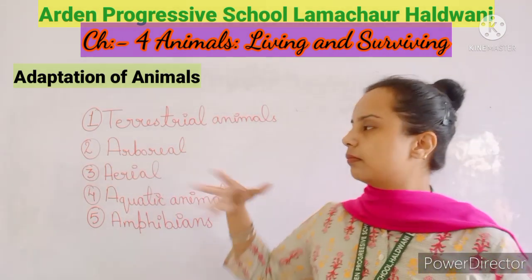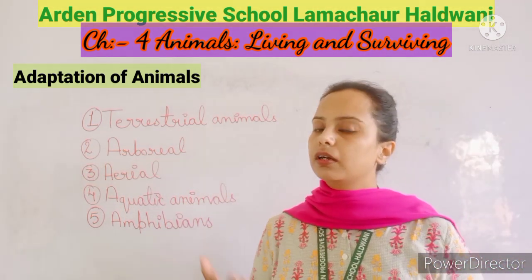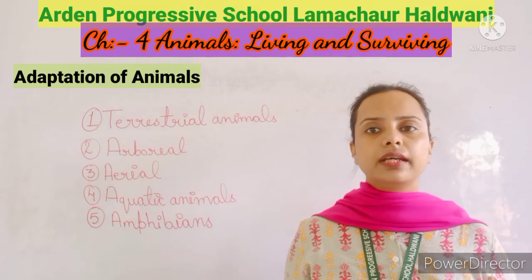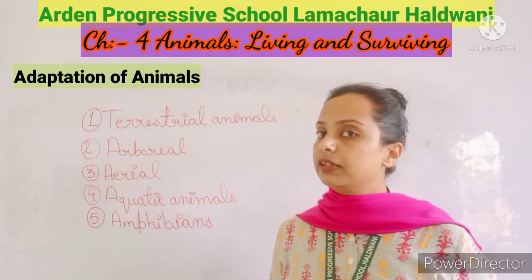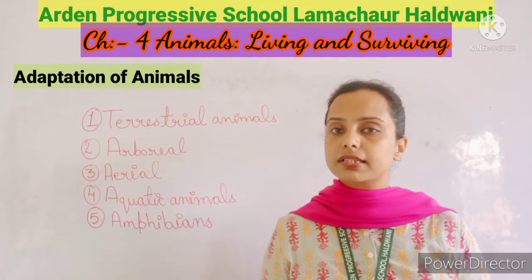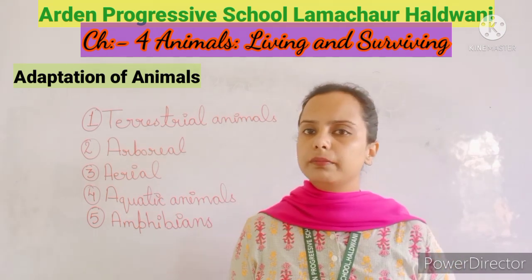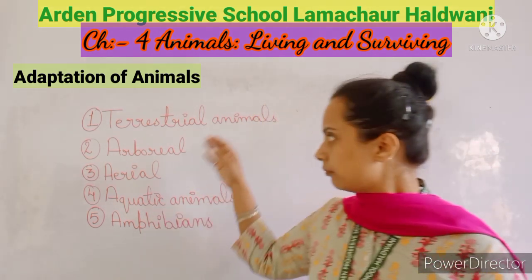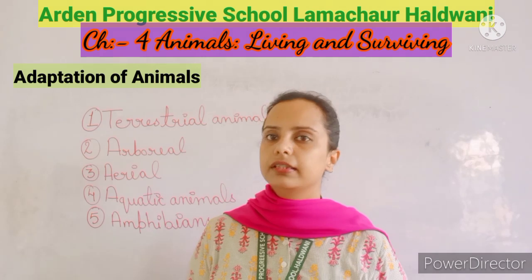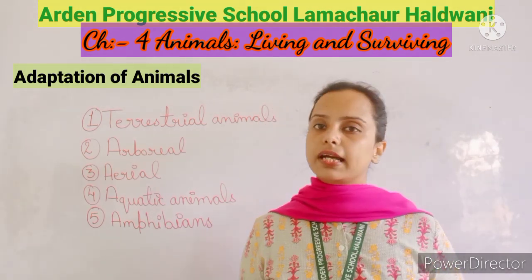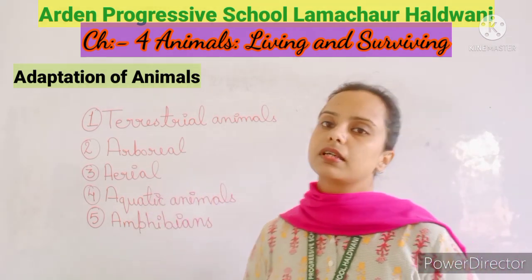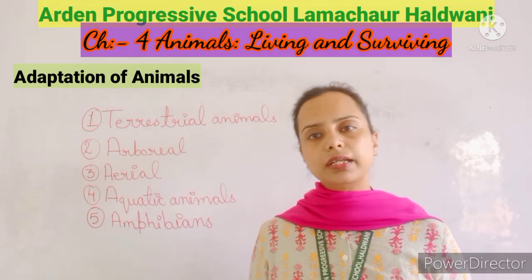Terrestrial animals have features adapted to life on land. They have four legs so they can walk and run. They have a furry body so that hair present on their body protects them from climatic changes. Terrestrial animals also have lungs to breathe. Similarly, arboreal and aerial animals also have lungs to breathe properly.